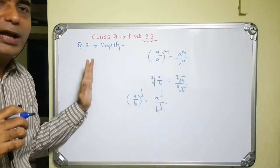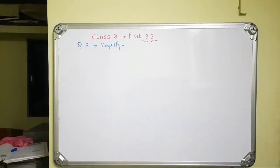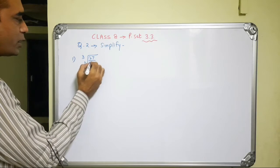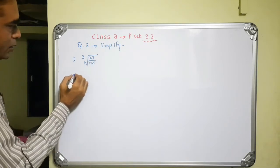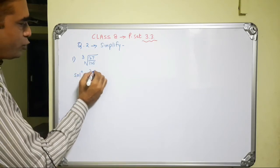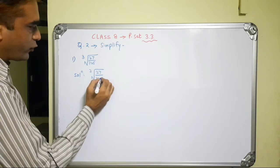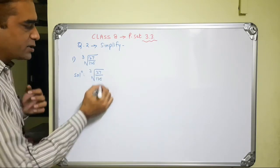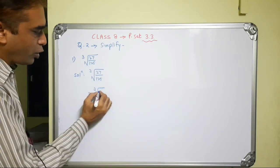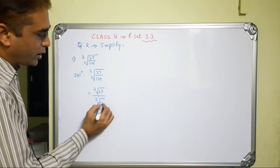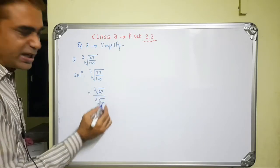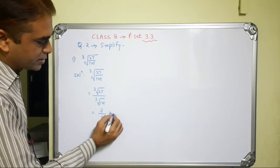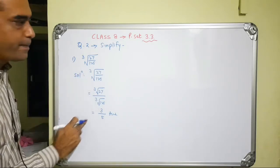The first sub-question is the cube root of 27/125. We write: cube root of 27/125 equals cube root of 27 upon cube root of 125. The cube root of 27 is 3 and the cube root of 125 is 5. So the answer is 3/5.